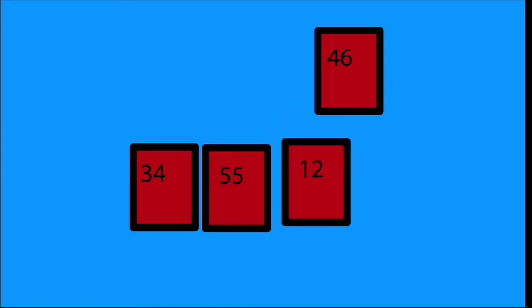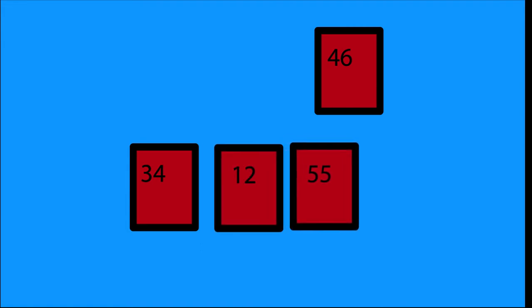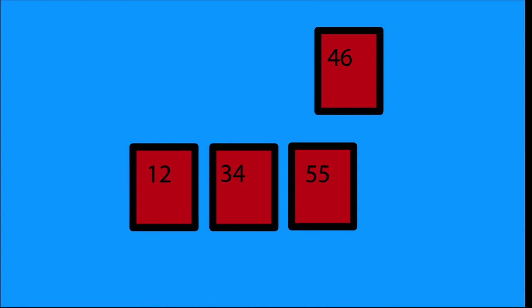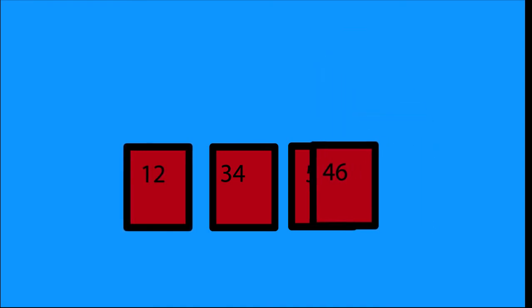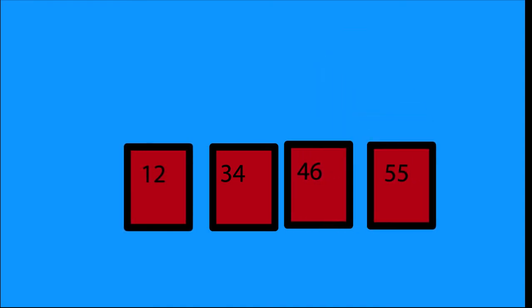This leaves me with my next element, 12, which is at the bottom of the array. I swap it with 55, and then swap it with 34. Now my hand is in ascending order again from left to right.